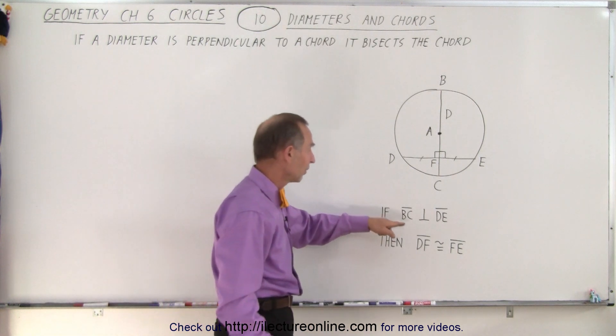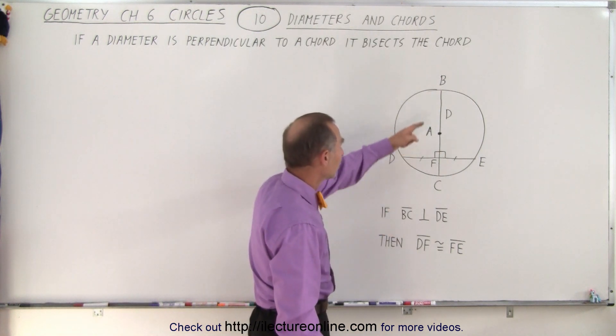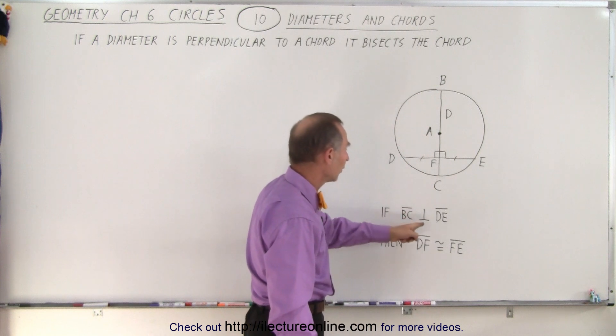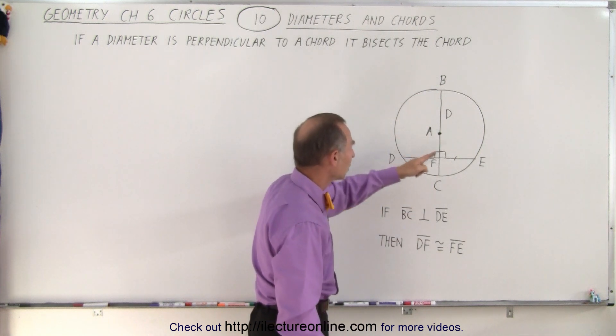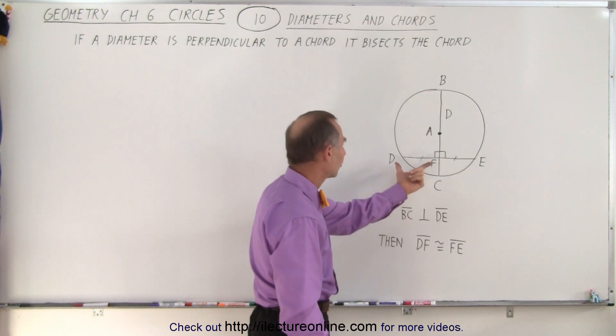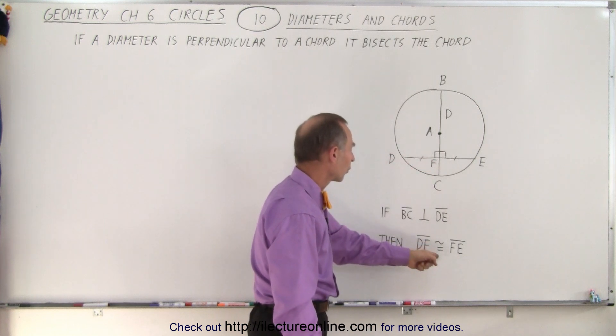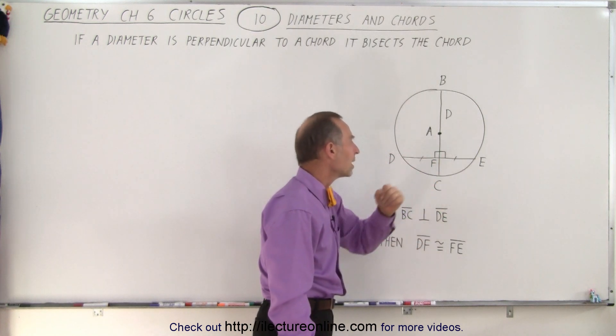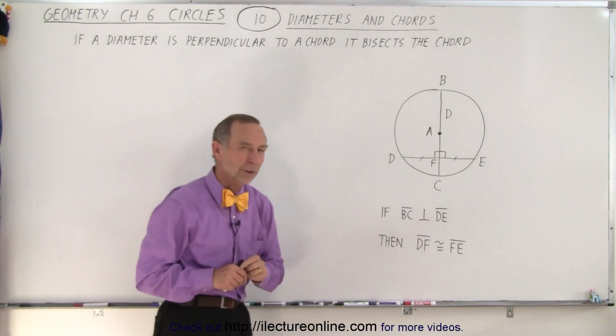In other words, if BC, which is the diameter from B to C, is perpendicular to the chord from D to E, then the segment from D to F is congruent to the segment from F to E. In other words, they must be of equal length.